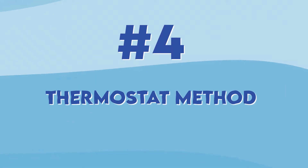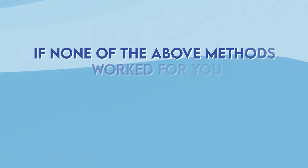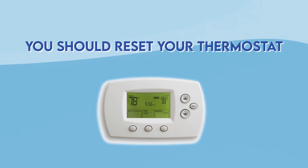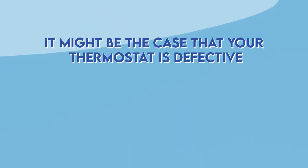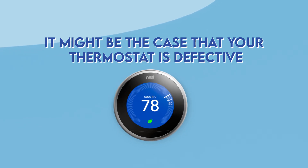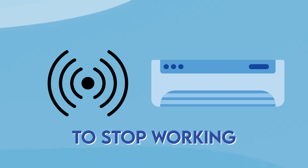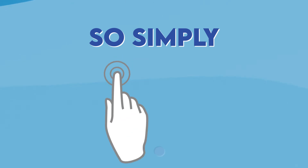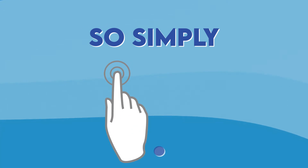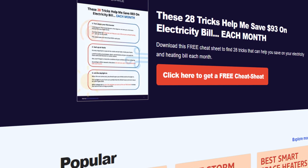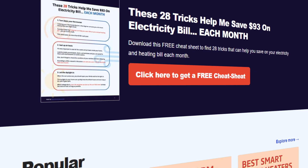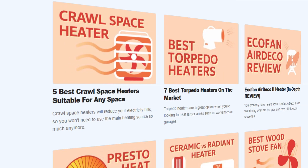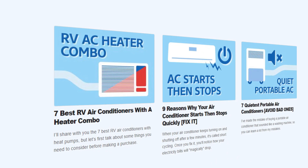Fourth, the thermostat method. If none of the above methods work for you, you should reset your thermostat. It might be the case that your thermostat is defective and is sending signals to your AC unit to stop working. The reset button on a thermostat is usually under the cover, so simply hold it for five seconds and it should restart.